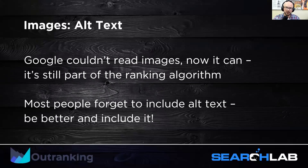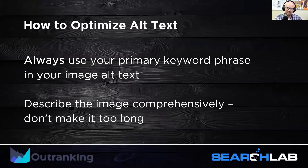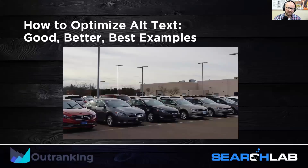How do I write good alt text? You always include your primary keyword phrase and describe the image comprehensively — don't make it too long, but describe it comprehensively. A good sniff test: if I were to close my eyes and you described the image to me, and then I opened my eyes, would that description match the image in a thorough and rich way? If the answer is no, then the alt text isn't very good. Let me show you some good, better, best examples.